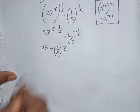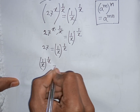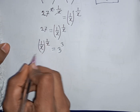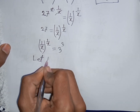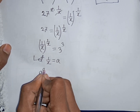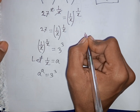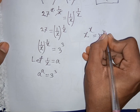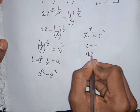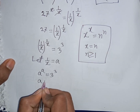So 1 by x bracket power 1 by x is equal to 27, which can be written as 3 power 3. We notice that 1 by x appears in both the base and the exponent, so let 1 by x be substituted by a. Our equation becomes a power a is equal to 3 power 3. Applying the rule that if x power x equals n power n then x equals n, where n is greater than or equal to 1, we can compare: a will be equal to 3.